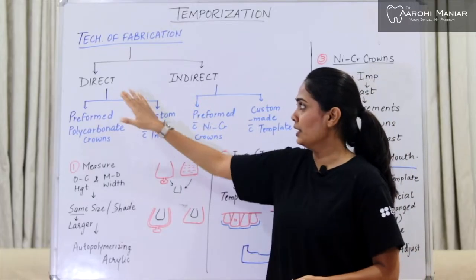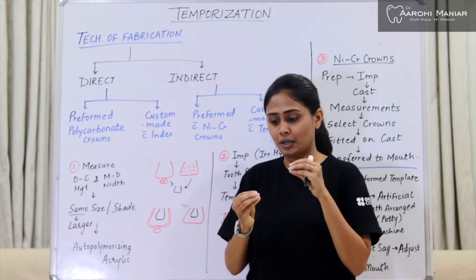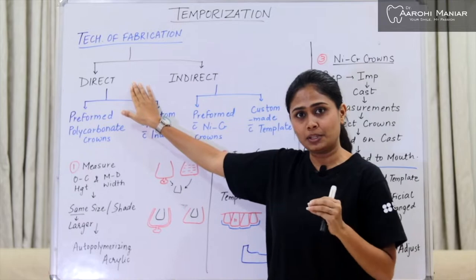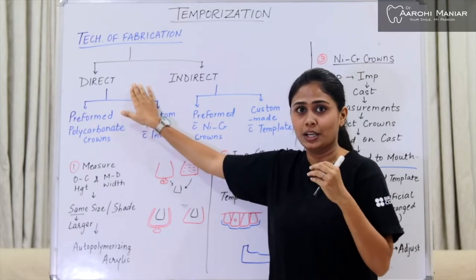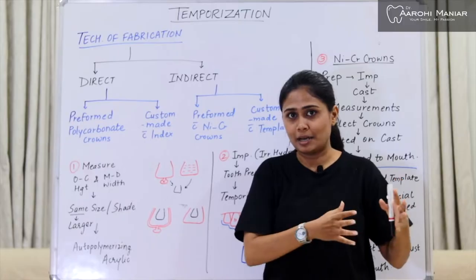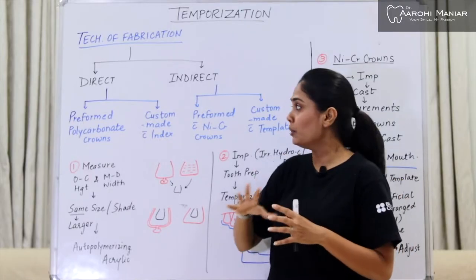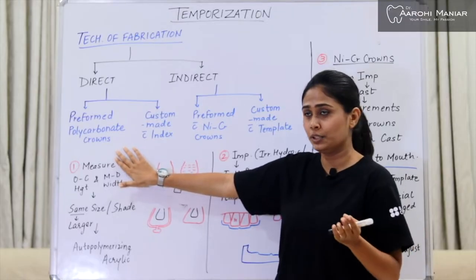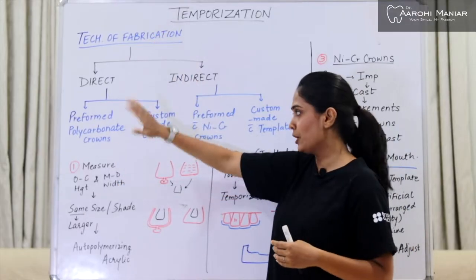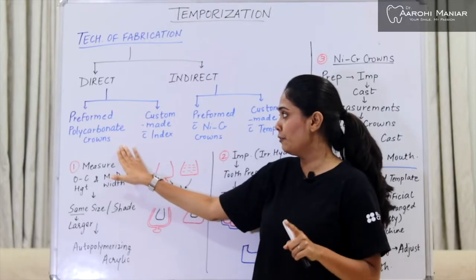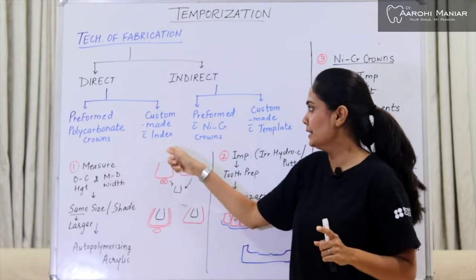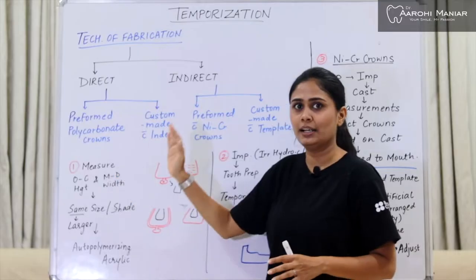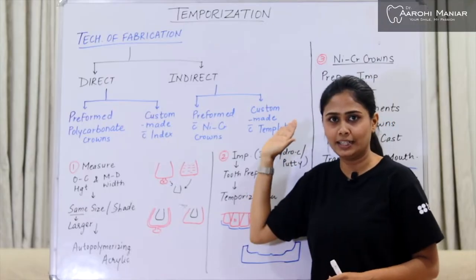Direct fabrication means we directly fabricate the temporary crown inside the patient's mouth. We don't take it to a lab — we do it in the same appointment, on the spot. In direct restoration, we have two methods: first, by using preformed polycarbonate crowns, and second, custom made with index.